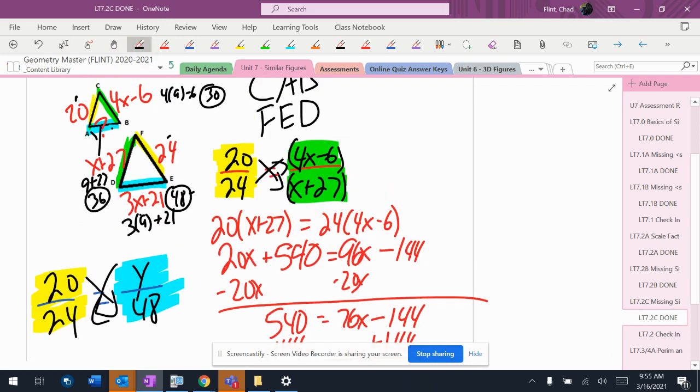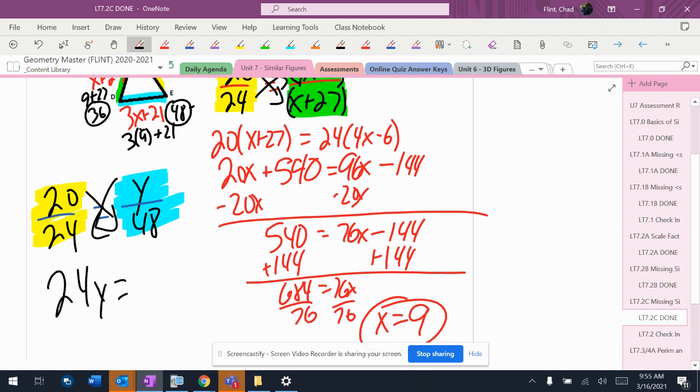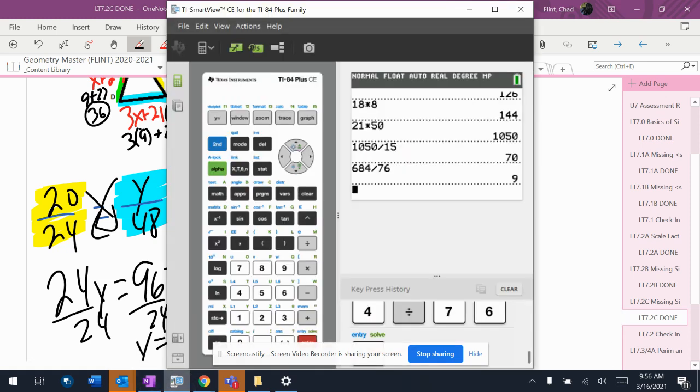I'm going to get 24Y equals 960, and I'm going to get Y equals 40.